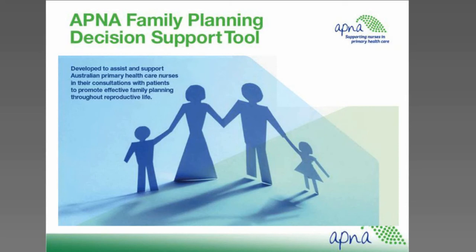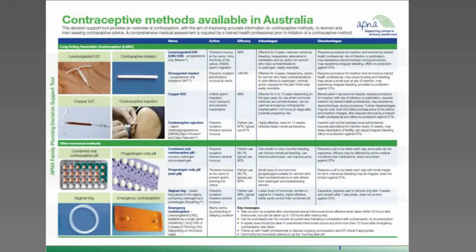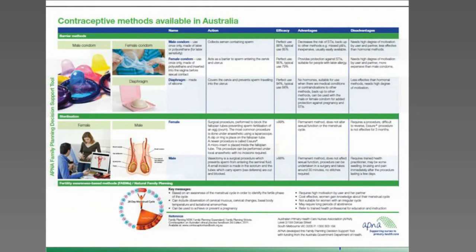At the same time, many people who wish to conceive have difficulty and need good advice on healthy conception. Primary health care nurses are ideally placed to play a greater role in this area through targeted lifestyle interventions, promoting fertility health and knowledge. Assisting nurses to advise patients well can help reduce comorbidities and complications of pregnancy and support appropriate use of assisted reproductive technology where necessary. The APNA Family Planning Phase 2 project developed the decision support tool for primary health care nurses in Australia to assist nurses in their consultations with patients and to promote effective family planning throughout reproductive life.